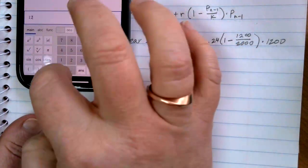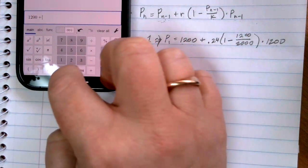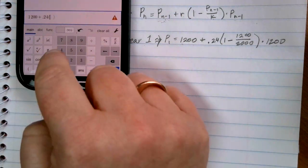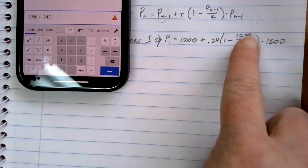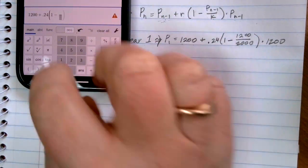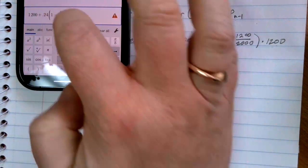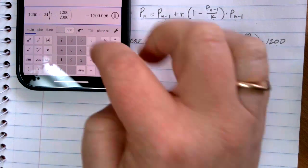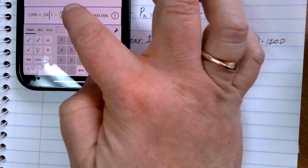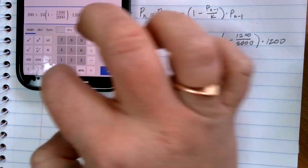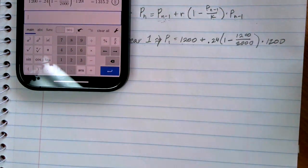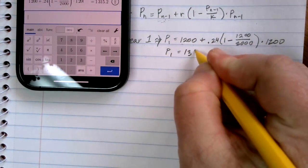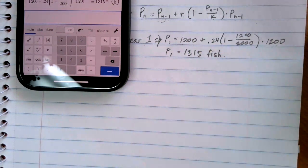All right. So what we're going to put in here is 1,200 plus 0.24. Then open the parentheses, and we're going to do 1 minus. I can either do 1,200 divided by 2,000, or I can use this fraction button and write the 1,200 on top and the 2,000 on the bottom. Oh, missed the two there. Close our parentheses. And then we want to times it by that 1,200 one more time. And in this case, I get 1,315 fish. At the end of year one.